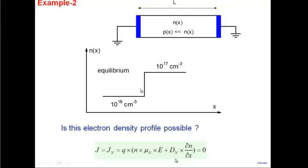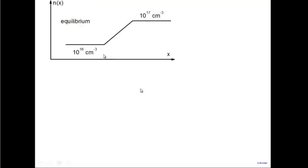If you assume an abrupt change, diffusion would immediately smear it out — electrons from the high-concentration side would flow to the low-concentration side until the profile becomes more gradual. Now consider a different case: what if the electron density varies linearly from 10^16 to 10^17? Is that possible? Again, we answer this using the equations.